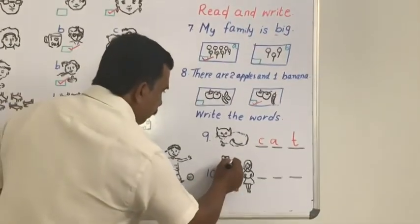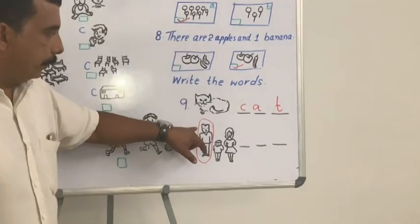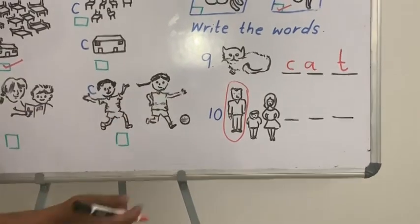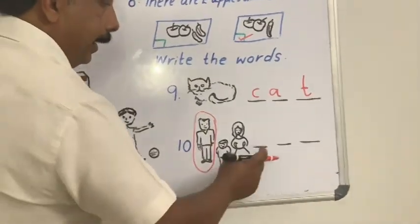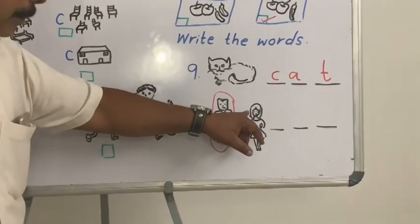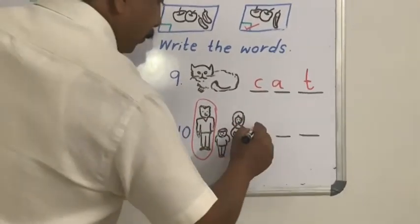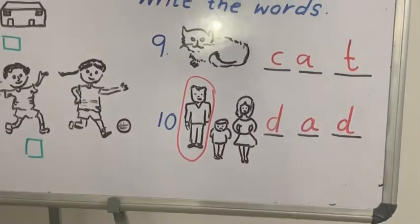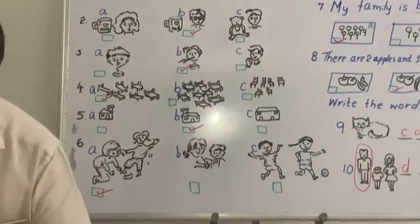Question number 10 — the picture is circled, so we should write its name. Who is this? Brother, sister, father? There are only three lines or dots, so it's not 'father.' What's another name for father? Yes — dad. So write D-A-D. Dad. Clear, children? We have completed both pages 26 and 27 from our activity book today.